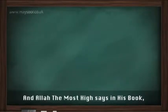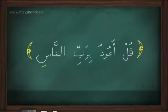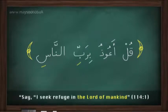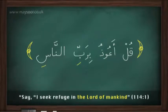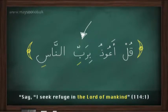Allah the Most High says in His book: 'Qul a'udhu bi rabbi al-nas' — 'Say, I seek refuge in the Lord of mankind.' In this example we can see that al-mudaf has taken a kasra, because of the particle (harf) 'bi' that came in front of it.